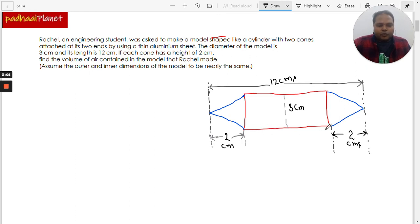With the help of these dimensions, we can also find out the length of the cylindrical part of the model. We can subtract the height of this cone and the height of this cone, that makes it 4 from 12, so this will be 8 centimeters.